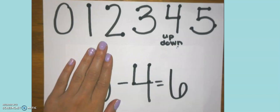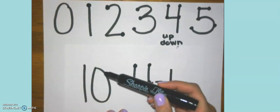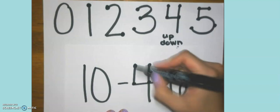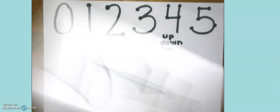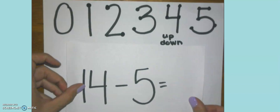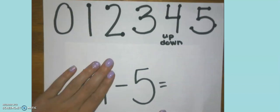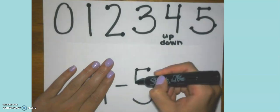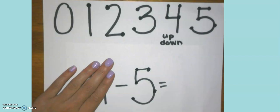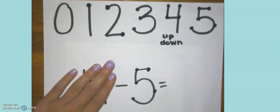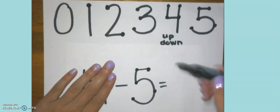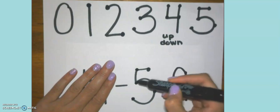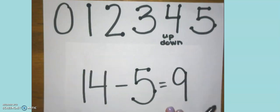I do the same thing, just instead of counting up to get a larger number like when I add, I'm going to count backwards and count down. Let's look at one last example of our subtraction touch points. 14 is my bigger number, so I only need to put my touch points on my five. Let's practice counting down, 14, 13, 12, 11, 10, 9. I tap my pencil on every touch point in order to get my answer.